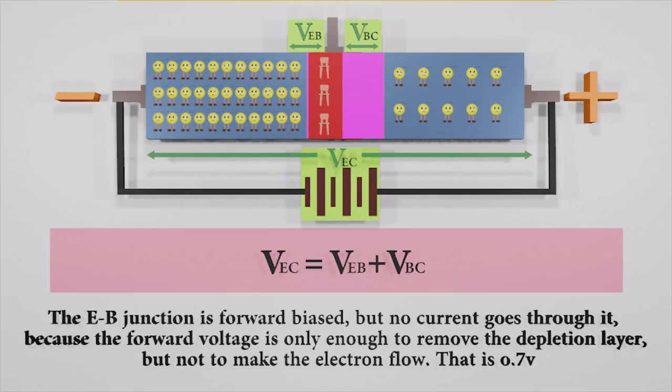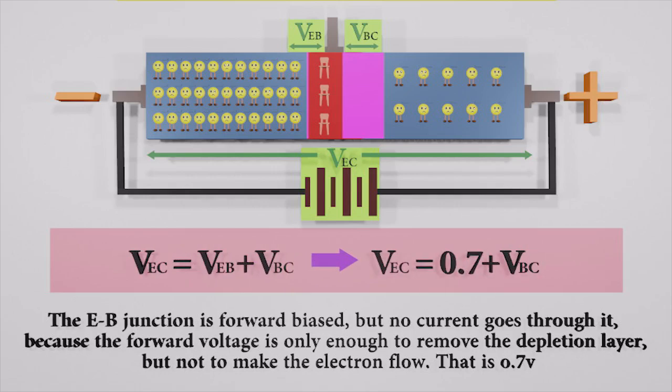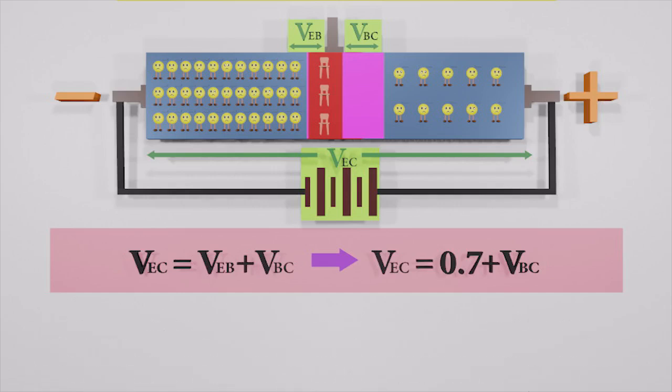Because the forward voltage is only enough to remove the depletion layer, but not to make the electron flow. So the BE junction is only 0.7 volt. So what should we do to pass electrons through the BE junction? The VEB should be larger than 0.7 volt.